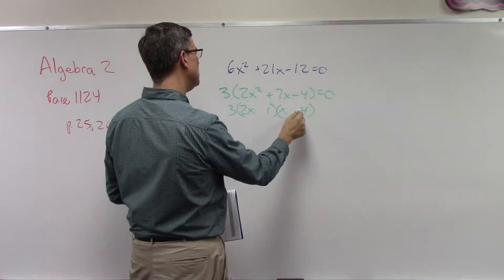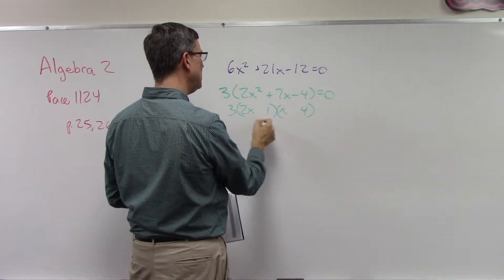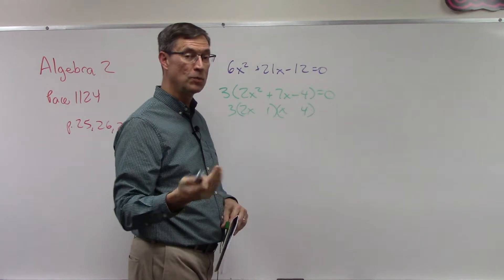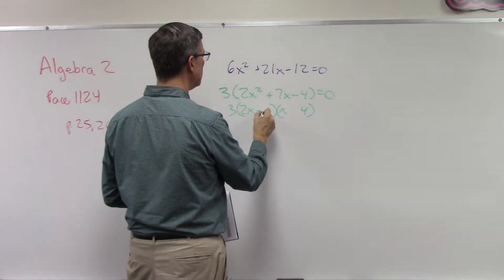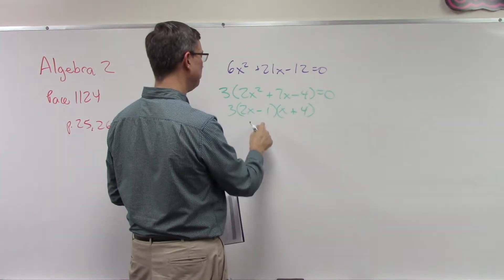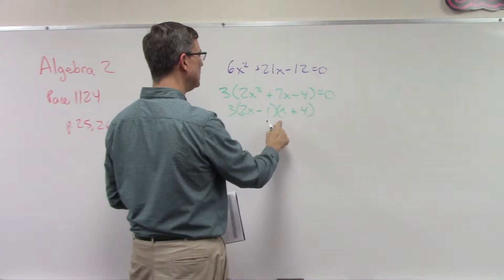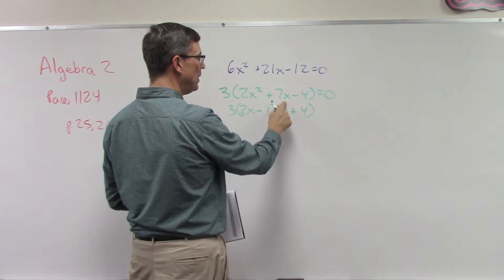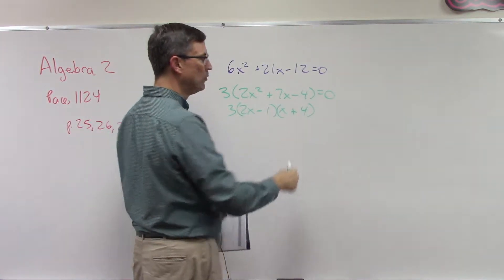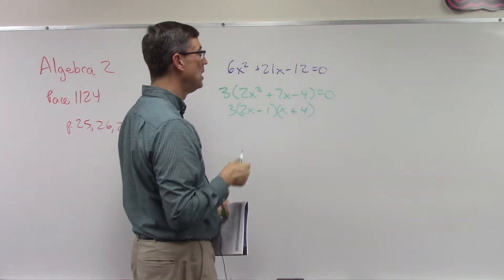Let's see, because 1 times 4 is 4, and I'm getting an 8 and a 1, and I can do 8 minus 1 to get 7. Let's do this: outer 8x, inner negative 1x. It gives me the 7x, and then negative 1 times 4 is negative 4. Now we're not done.